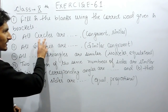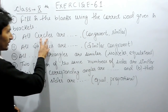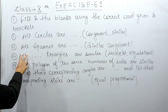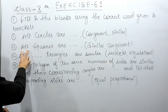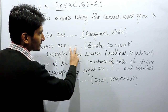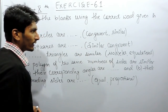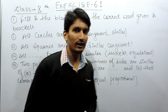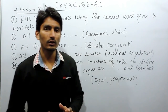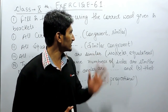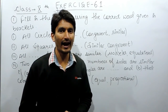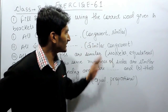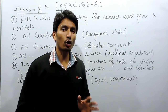Similarly, in the second question you have to find whether all squares are similar or congruent. To solve this question, first let's find what is the difference between congruent figures and similar figures. Congruent figures are basically a ditto copy of each other.